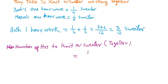Means work is one and in one hour both will knit 5 by 12 sweater. After calculation you will have 12 by 5 hours.